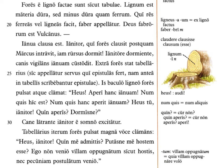Ianitore dormiente — notice ianitore and dormiente, a present participle, are in the ablative case with the short -e third declension ending. This is an ablative absolute; I like to translate those with 'with': with the doorkeeper sleeping, that is under the circumstances of the doorkeeper sleeping, canis vigilans, the watchful dog, ianuam custodit, guards the door.